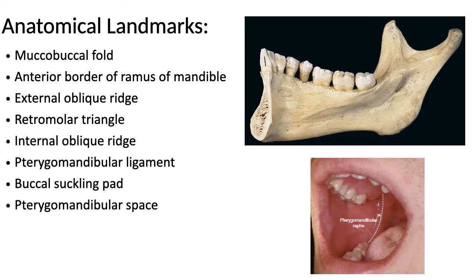The anatomical landmarks include the mucobuccal fold, the anterior border of the ramus of the mandible, external oblique ridge, retromolar triangle, internal oblique ridge, pterygomandibular ligament, buccal fat pad, and pterygomandibular space.